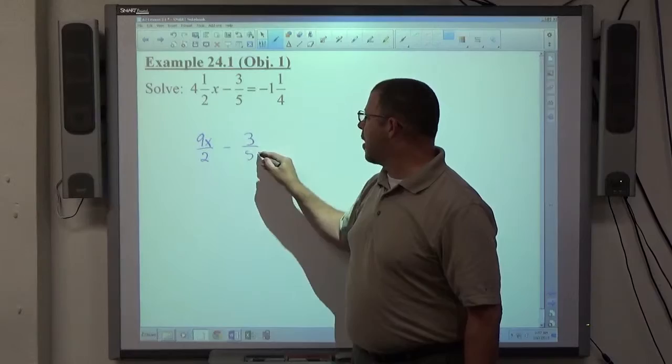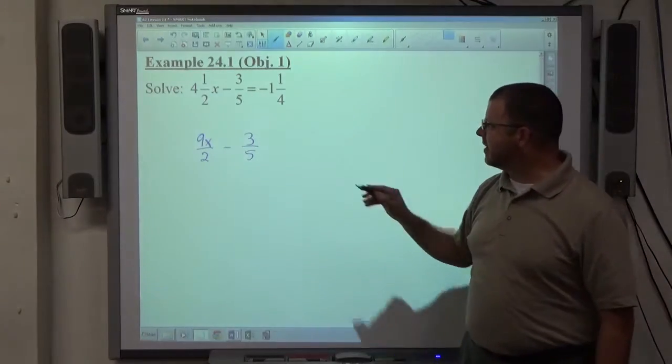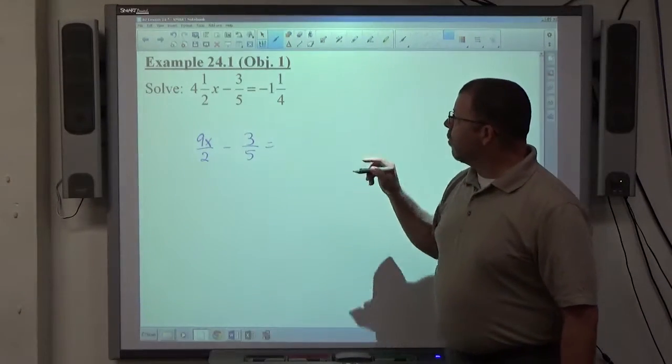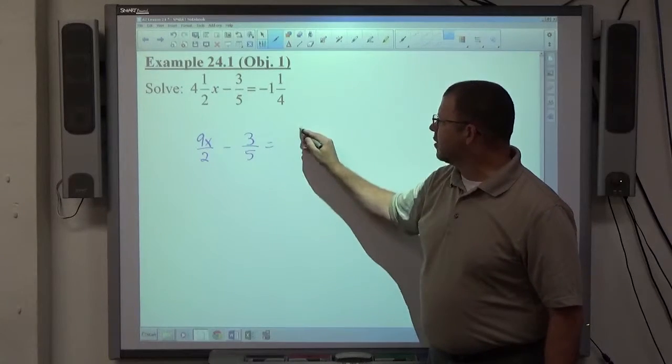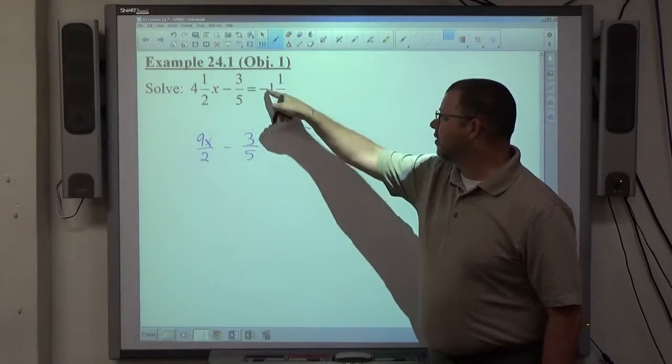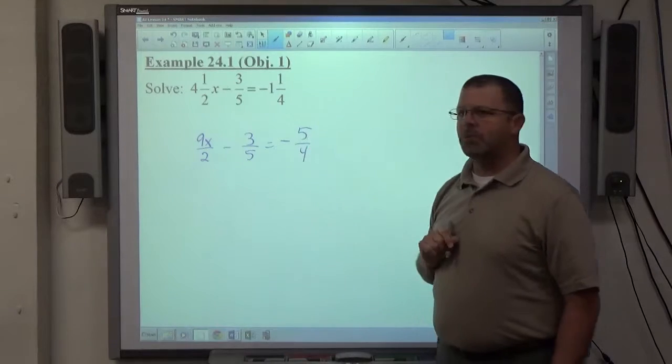Minus 3 fifths is a simple proper fraction, so leave it as is. And negative 1 and 1 fourths, we've got 1 times 4 is 4 plus 1 is 5 fourths. And the fact that it's a negative mixed number means it's a negative improper fraction.